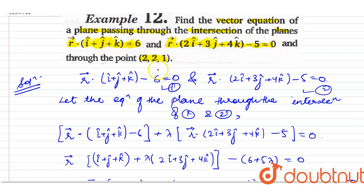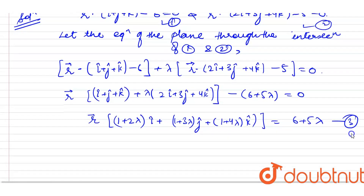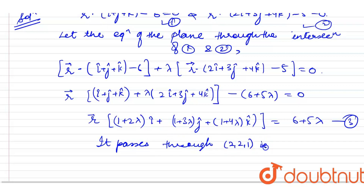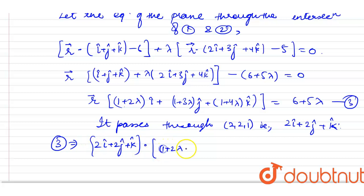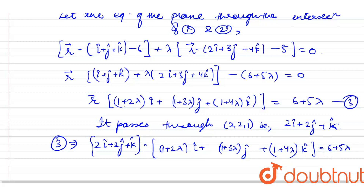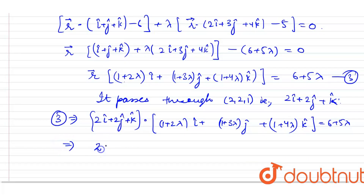Now, it is given that this plane passes through the point (2, 2, 1). The position vector of this point is 2i-cap plus 2j-cap plus k-cap. Substituting into equation 3: (2i-cap plus 2j-cap plus k-cap) dot [(1 plus 2lambda) i-cap plus (1 plus 3lambda) j-cap plus (1 plus 4lambda) k-cap] equals 6 plus 5lambda.